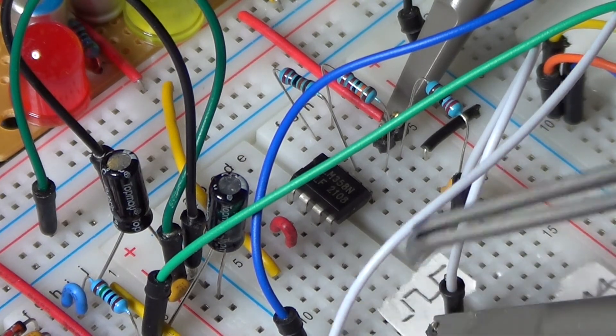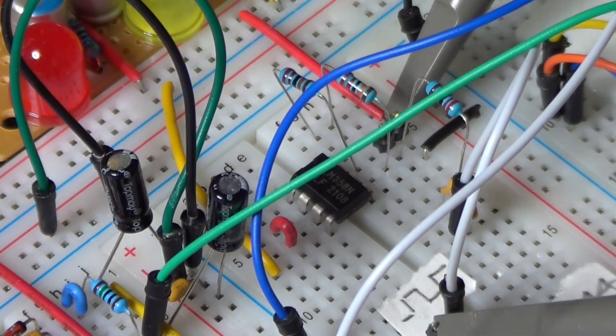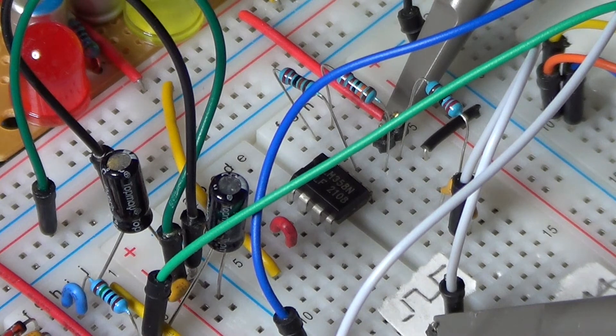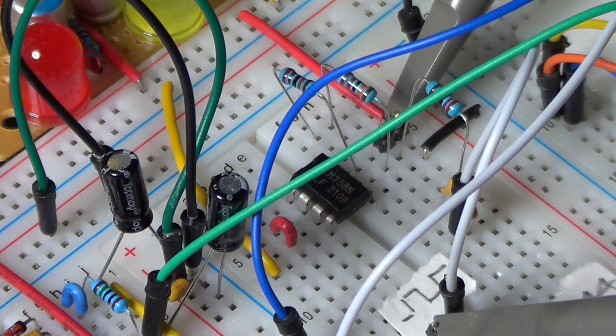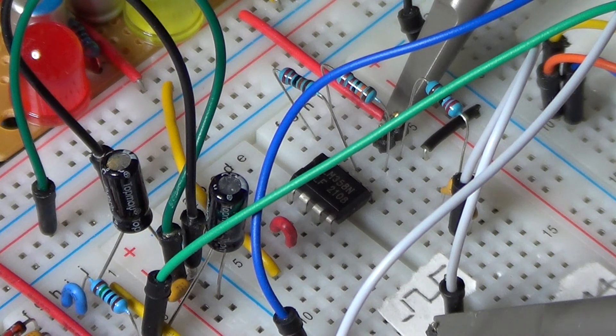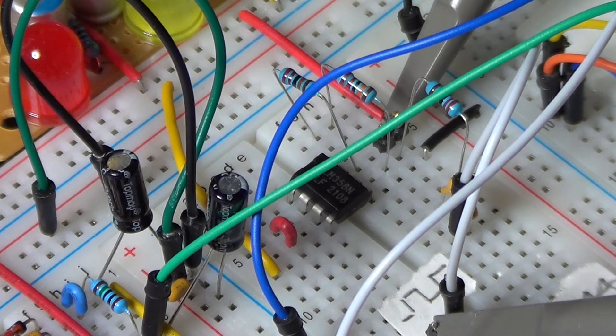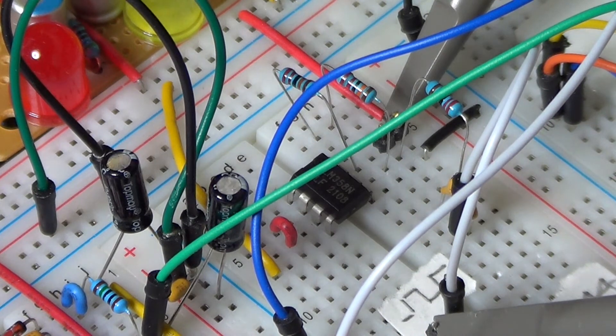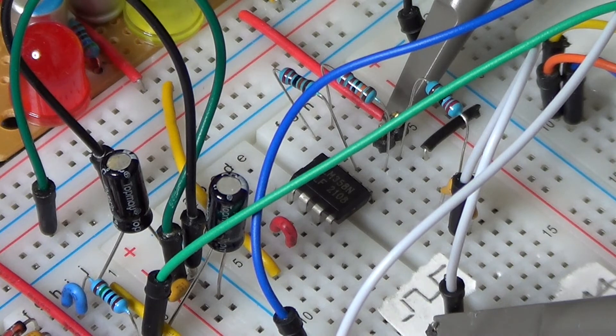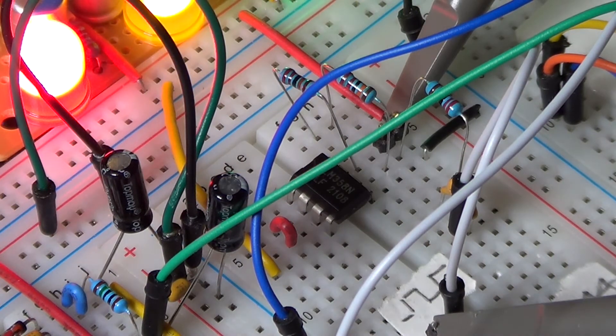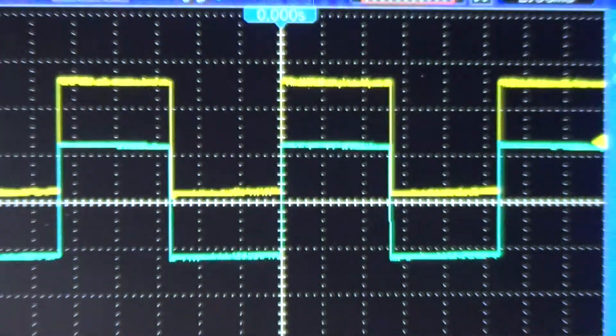I also used two oscilloscope channels and probes. The first is attached here on the VCO square wave output. The second probe is instead attached to the output of this new circuit, and so we can compare the input and the output signals at the same time. Let's now turn on the power supply and check on the oscilloscope how the real circuit behaves.